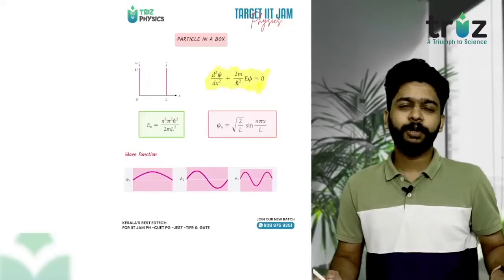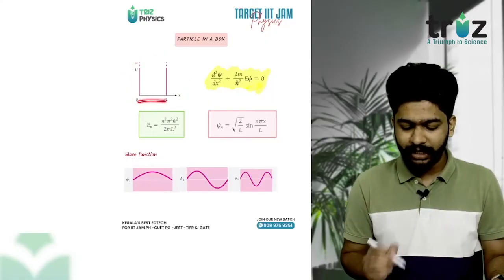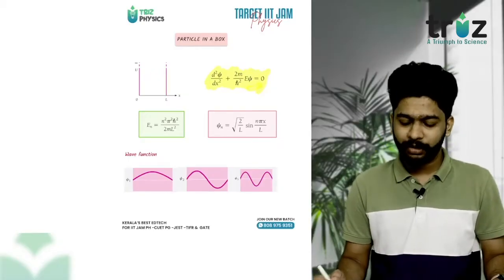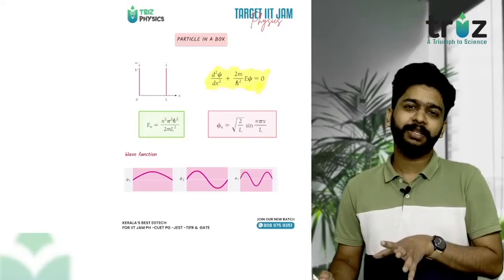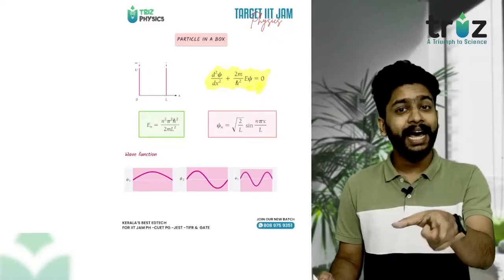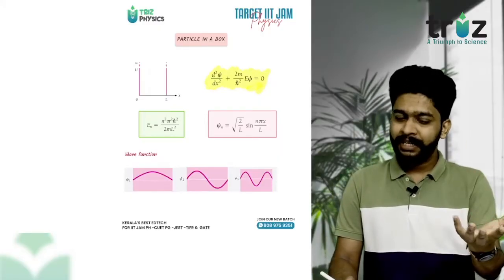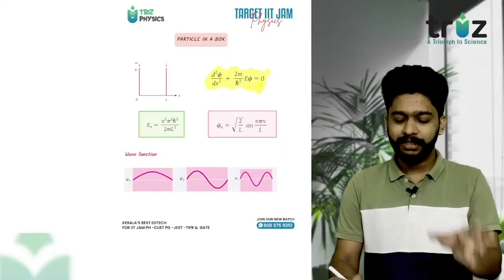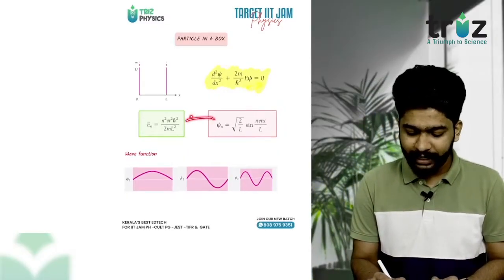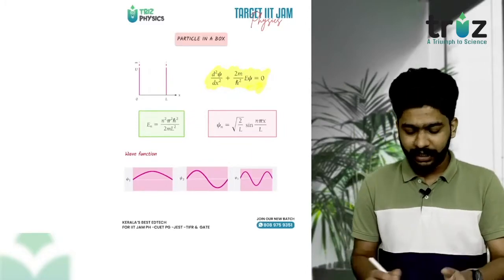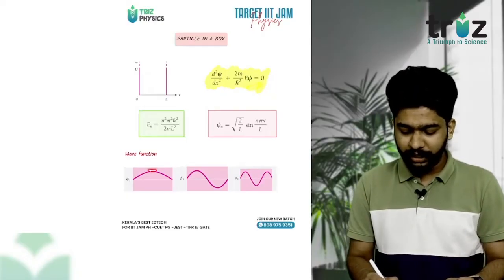One bound state case is the particle in a box. The potential is zero from 0 to L and infinite elsewhere, so ψ equals zero at the boundaries. Substituting into the Schrödinger equation gives something like d²x/dt² + ω²x = 0. The general solution is ψ = A sin(ωt) + B cos(ωt), or e^(ikx) + e^(-ikx). Applying boundary conditions gives ψ = √(2/L) sin(nπx/L), with corresponding energy levels. For n=1 (ground state), n=2, 3... give the excited states, and n gives the number of nodes.